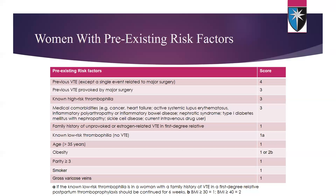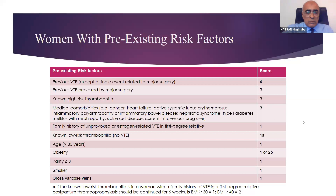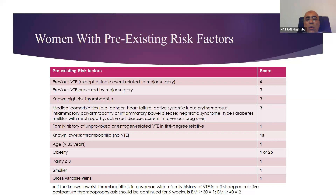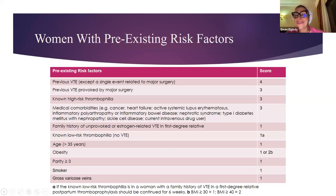This is a big list of risk factors. Women with pre-existing risk factors: those with previous VTE except a single event related to major surgery score four; VTE provoked by major surgery scores three; non-high-risk thrombophilia scores three; medical comorbidities such as cancer, heart failure, active systemic lupus, inflammatory polyarthropathy scores three.